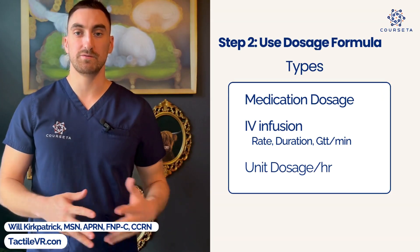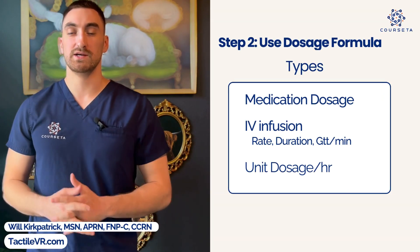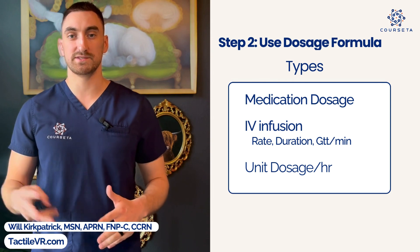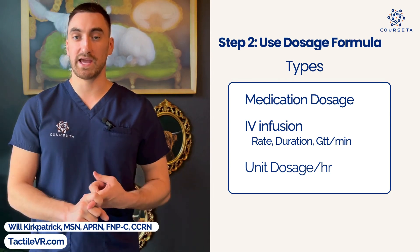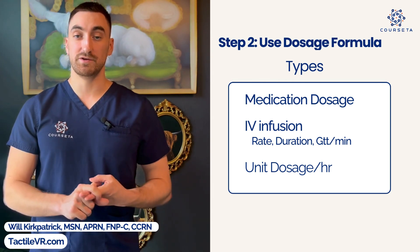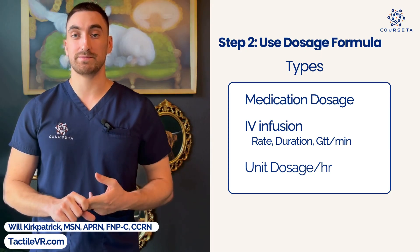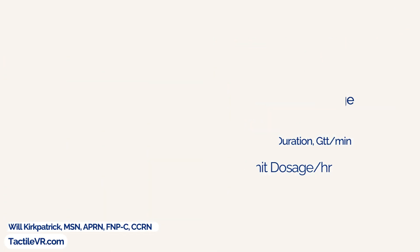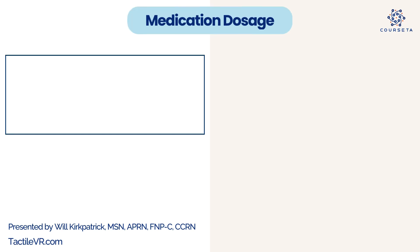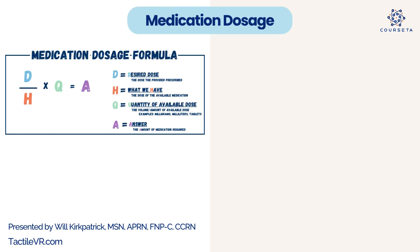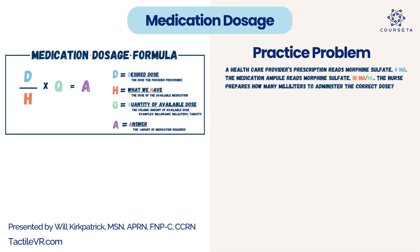Step two is to use the dosage formula. There are three types of dosage formulas you'll need to know: the medication dosage formula, the IV infusion dosage formula with three different types, and unit dosage per hour. For the medication dosage formula, the variables are D, H, Q, and A. D equals desired dose, H equals what you have, Q equals the quantity of the available dose, and A equals your answer.